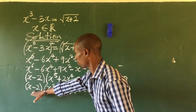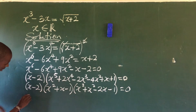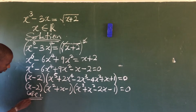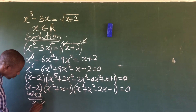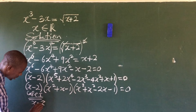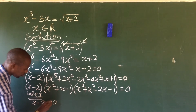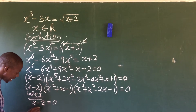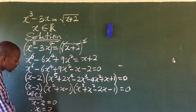Case 1 is straightforward. From x minus two equals zero, we get x₁ equals two.